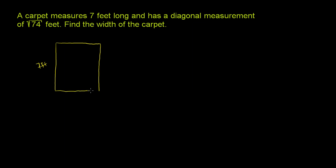That's our carpet. And then it has a diagonal measurement of square root of 74 feet. So that means that this distance right here - let me draw a little bit neater than that - this distance right here, the diagonal of the carpet, is the square root of 74 feet.